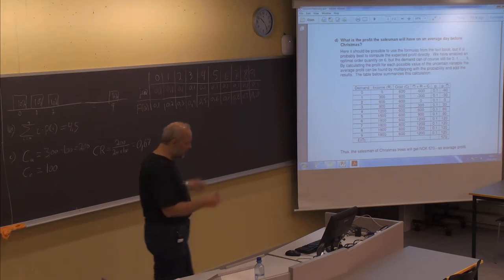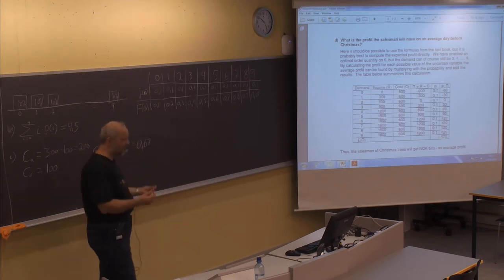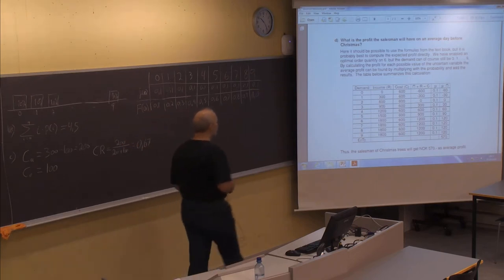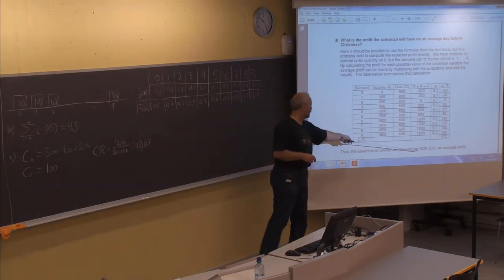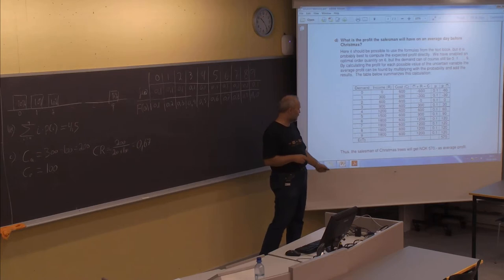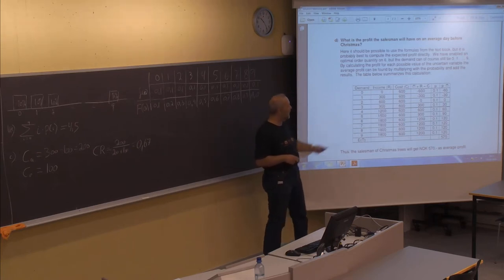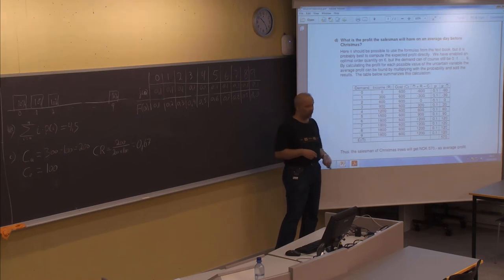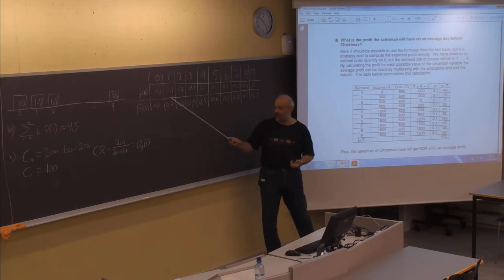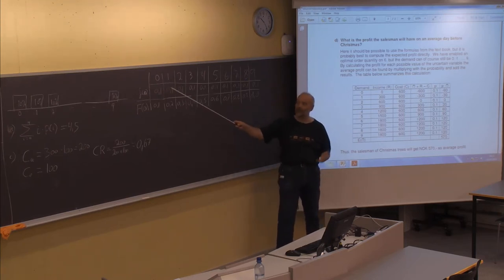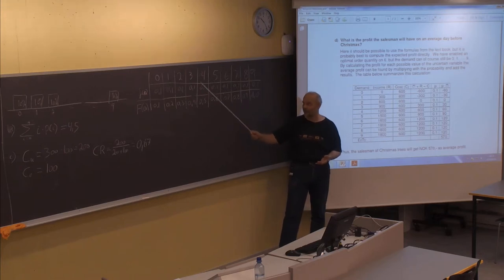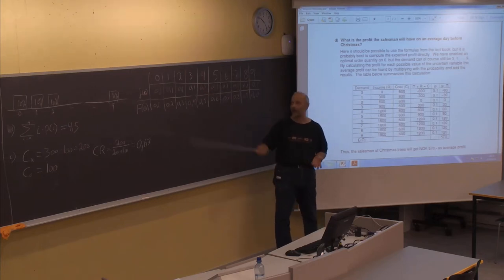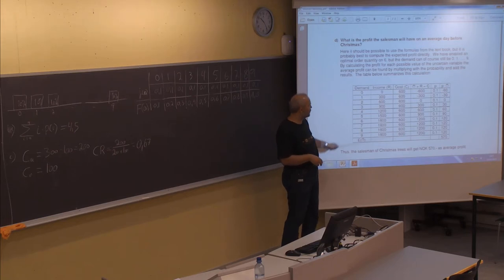The average or expected profit in this case will be 570 — the expected profit which takes into consideration the probabilities for all these possible options. Sometimes you do not have the same probability; you might have a higher probability for some outcomes than others, and then you should just use the correct probability. The principle is the same: find the cumulative probability of not having a higher demand than each of the possible outcomes, and find the number where the indicator matches the cumulative probability.